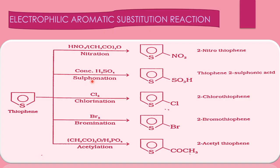The next reaction is electrophilic aromatic substitution reaction. In the previous class I already explained electrophilic substitution reaction for furan and pyrrole. Here only the heterocyclic compound changes — a 5-membered ring with sulfur atom. The reactions are: nitration, sulfonation, chlorination, bromination, and acylation. Addition of NO₂ group at the second position is the nitration reaction, using reagent HNO₃ and sodium acetate with acetic anhydride. The product is 2-nitrothiophene.